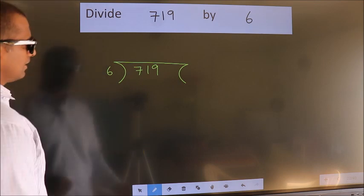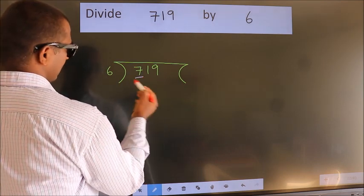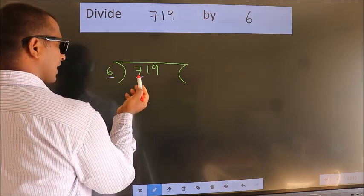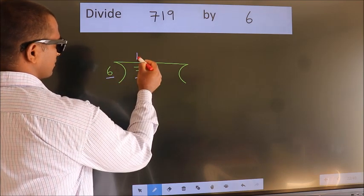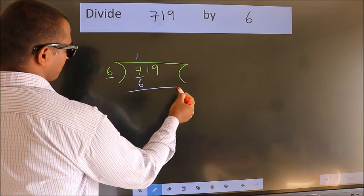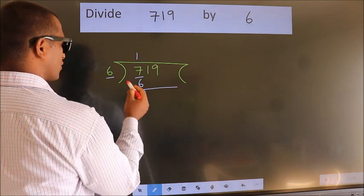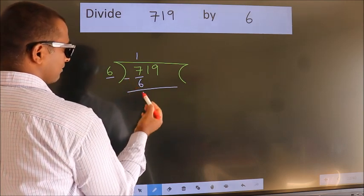Next, here we have 7. Here 6. A number close to 7 in the 6 table is 6 once 6. Now we should subtract. We get 1.